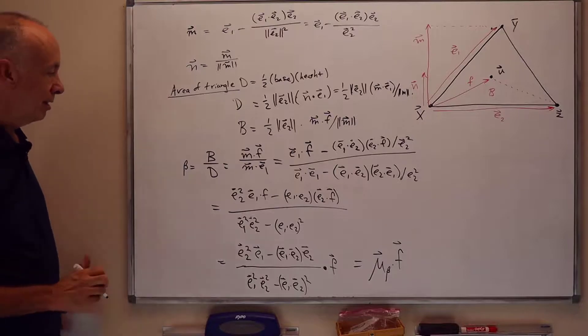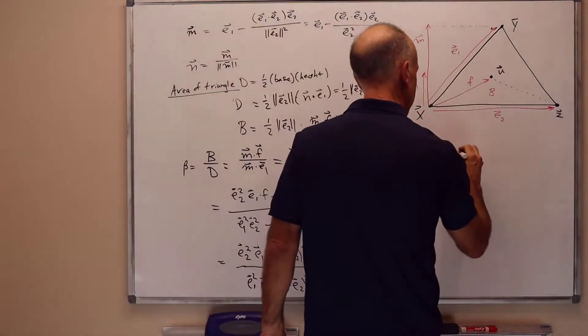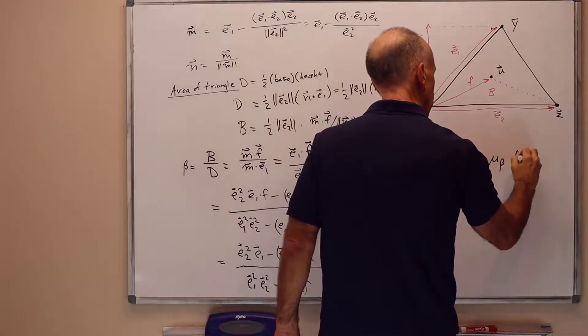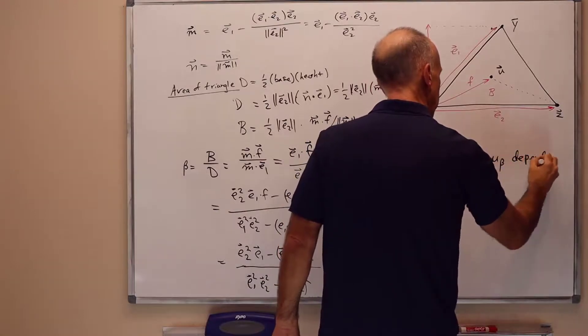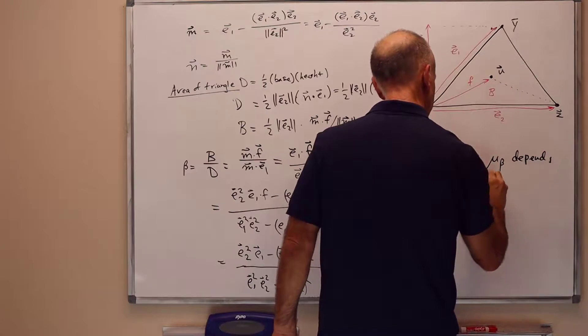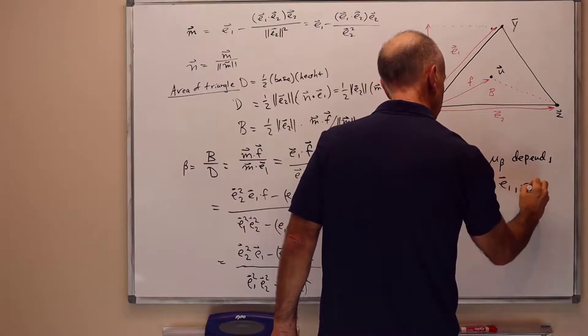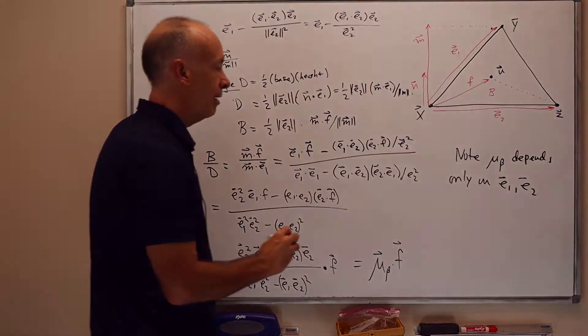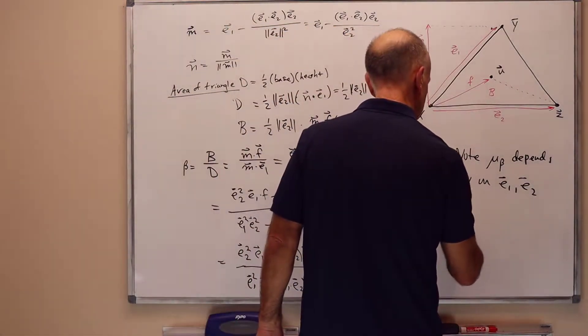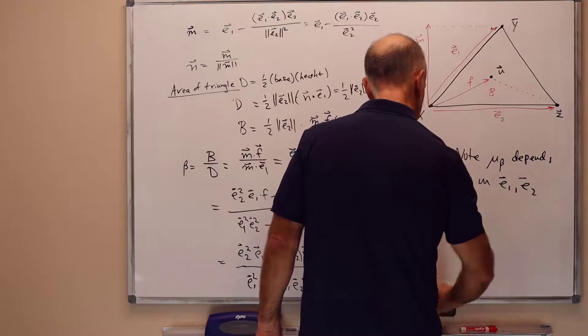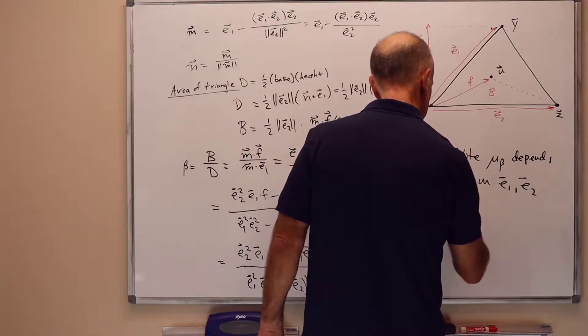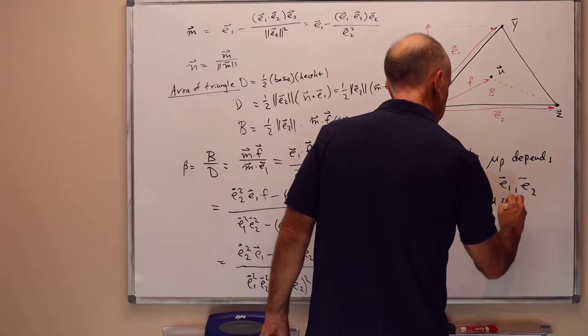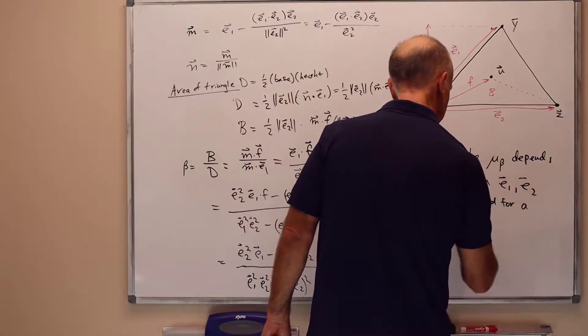It doesn't depend on f at all. So mu beta is fixed for a fixed triangle.